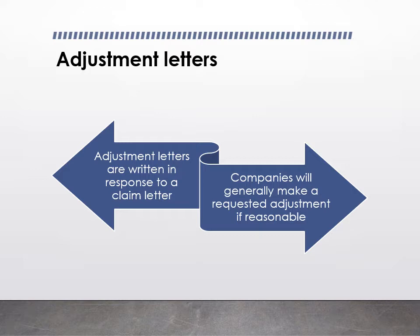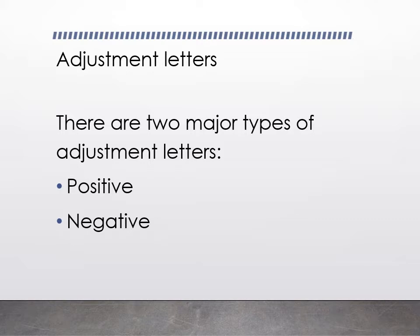The problem is a lot of people aren't very reasonable. There are two kinds of adjustment letters, just as there were two kinds of claim letters: the positive adjustment letter, which says yes, I'll do the thing you want, and the negative adjustment letter, which says no.